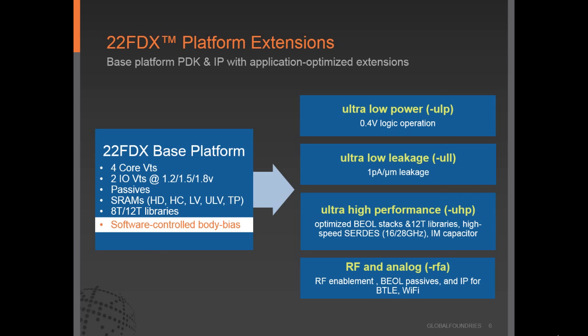22FDX has a very comprehensive base platform. That base platform provides four core VT offerings, two IO VTs that can operate at 1.2, 1.5, or 1.8 volts, a complete set of passives similar to what's offered in any leading-edge 28 nanometer technology, and a broad array of SRAMs spanning high-density, high-speed, low-voltage, ultra-low-voltage, and two-port SRAMs. The technology platform has a complete suite of IP including high-density and high-speed standard cell libraries, and all of this is enabled with software-controlled body biasing capability.